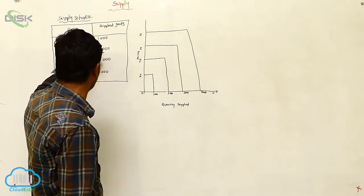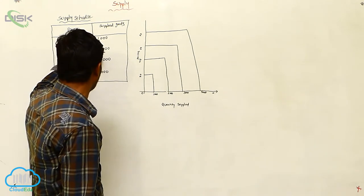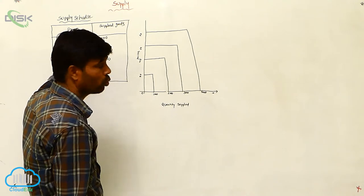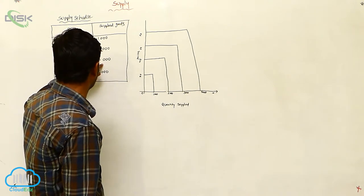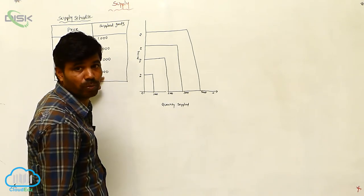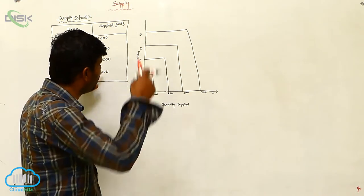When you compare: 1000 supplied at 30 Rupees, 2000 supplied at 40 Rupees, 3000 supplied at 50 Rupees, 4000 supplied at 60 Rupees. We can draw the curve.